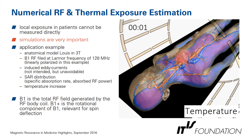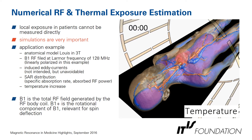Where we have a high concentration of these currents, we also have a high local deposition of RF energy. That's what you can see in the SAR distribution slides. We have a hotspot in LUIS near the neck region. Subsequently, we can do a thermal simulation with the SAR distribution as input, where you see that with time — 5, 10, 15 minutes — we heat up the tissues, especially at these hotspots.